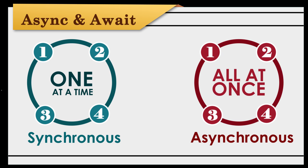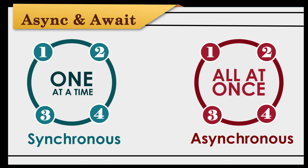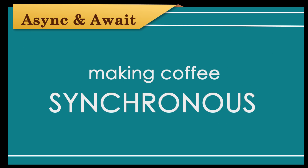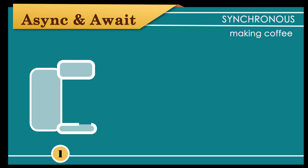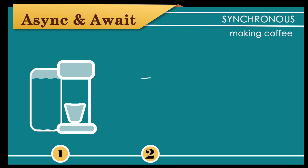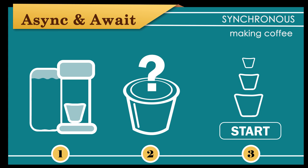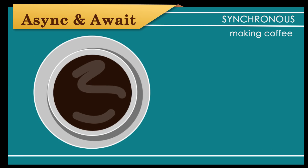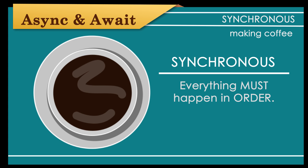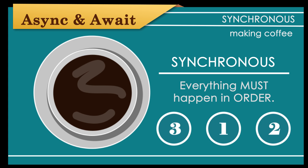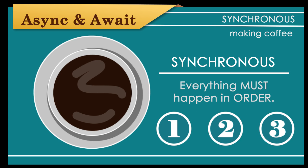We use synchronous and asynchronous processes every day. For example, making coffee with your single-serve coffee maker is a synchronous process. First, you need to fill the coffee maker with water. Next, you pick out your flavor. Then, you select the cup size you'd like to make and press start. Finally, your coffee maker brews your perfect cup of coffee. This is a synchronous process because everything has to happen in order — you can't brew the coffee before you add water or pick the flavor. You have to follow the process from start to finish.